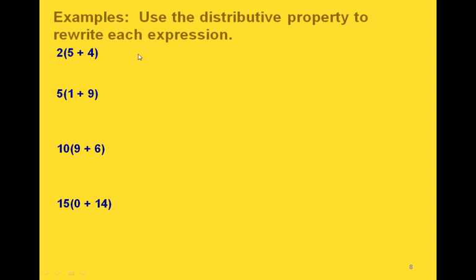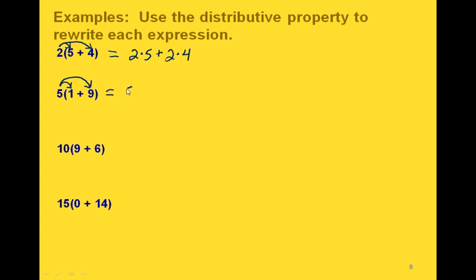Here are some examples where we use the distributive property to rewrite each expression. In this one, we take the 2 and distribute it to both the 5 and the 4, giving us 2 times 5 plus 2 times 4. In this one, we take the 5 and distribute it to the 1 and to the 9, giving us 5 times 1 plus 5 times 9. In this one, we're distributing the 10 to both the 9 and the 6, so that gives us 10 times 9 plus 10 times 6.